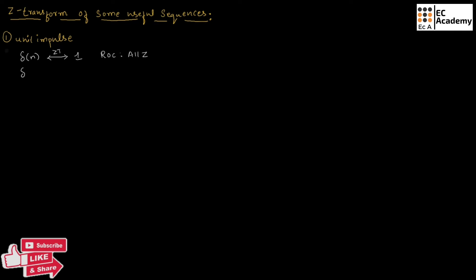If we have delta of n minus n0, the Z-transform will be Z to the power of minus n0, and ROC will be magnitude of Z greater than 0. If we have delta of n plus n0, the Z-transform will be Z to the power of n0, and ROC will be magnitude of Z less than infinity.